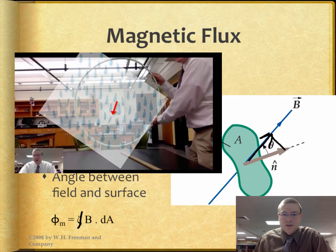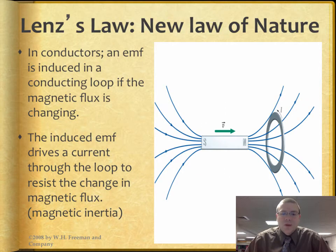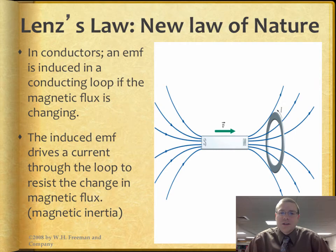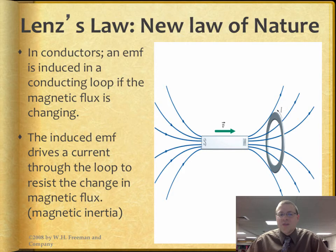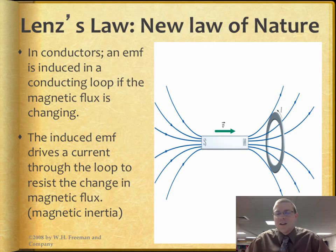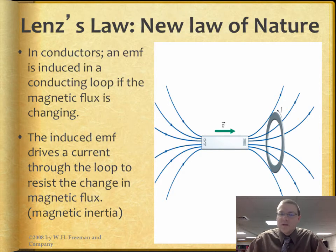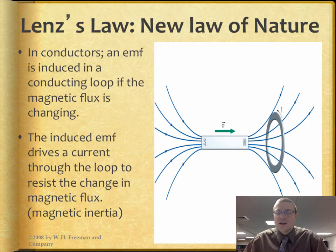This brings us to Lenz's Law, which was the entire demonstration we saw in lab. When we have conductors not attached to a power supply, what we get is an induced EMF or induced voltage in the loop if and only if the magnetic flux is changing. The induced EMF drives currents in those loops to resist the change in magnetic flux — we call this magnetic inertia. Objects want to keep the amount of flux they have; whether they have no flux or some flux, they don't want that amount to change. If it does, the loop will create currents to try and resist that.